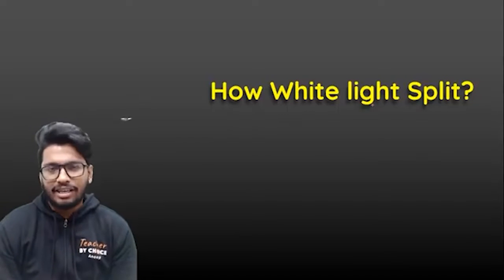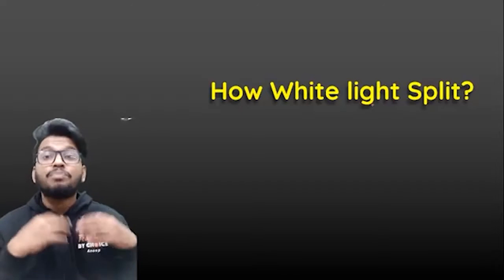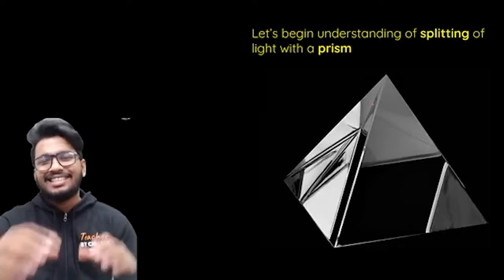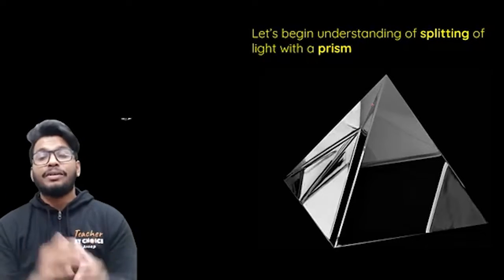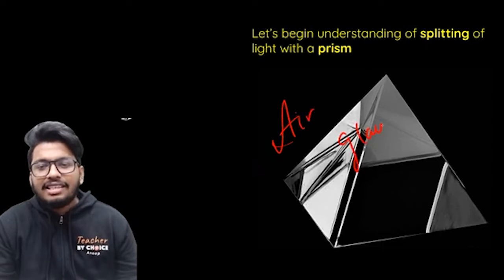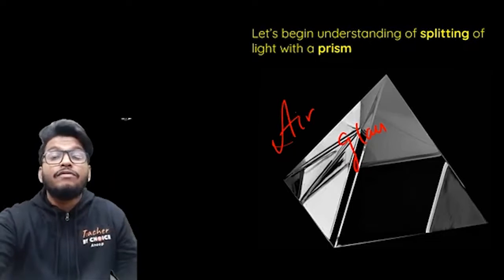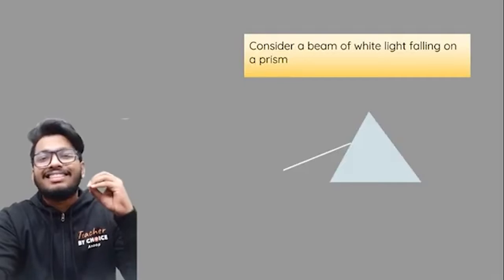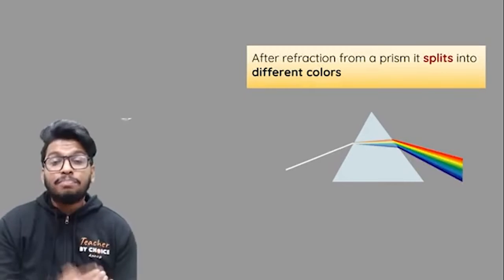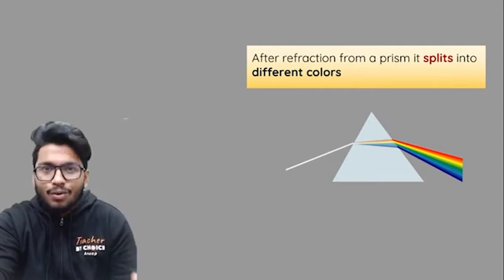The question is: how do you prove that white light is a combination of so many different colors — how do you split it? The answer is a prism. All you have to do is take a prism and pass white light through it. The prism is a denser medium, so light travels from air into glass, refraction happens, and because every color has its own wavelength, the white light gets split into seven prominent colors. This phenomenon is called the dispersion of light.